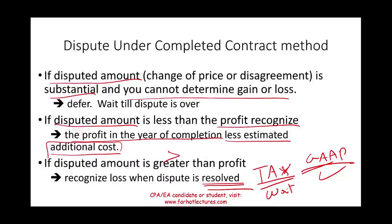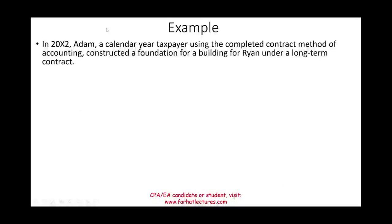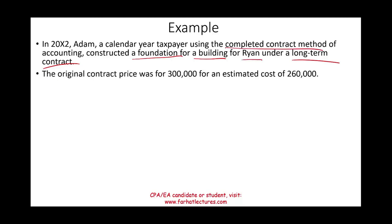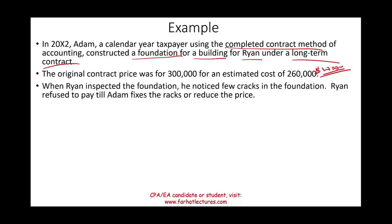Let's illustrate with an example. In 20X2, Adam, a calendar year taxpayer using the completed contract method, constructs a foundation for Ryan under a long-term contract. The original contract price is $300,000 with an estimated cost of $260,000, giving Adam an expected profit of $40,000. When Ryan inspects the foundation, he notices cracks and refuses to pay until Adam fixes them or reduces the price.